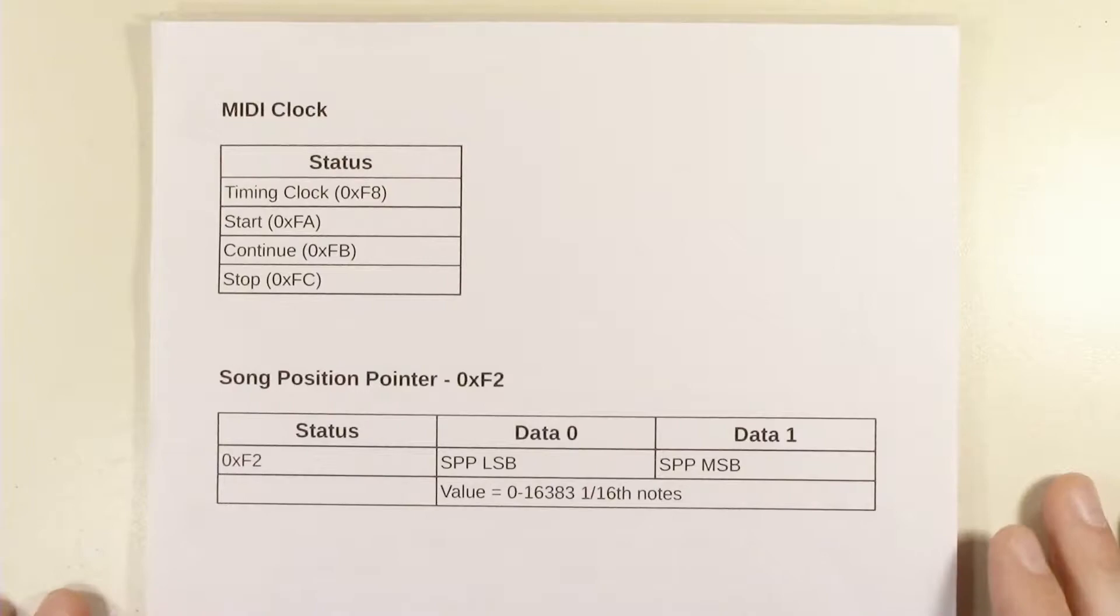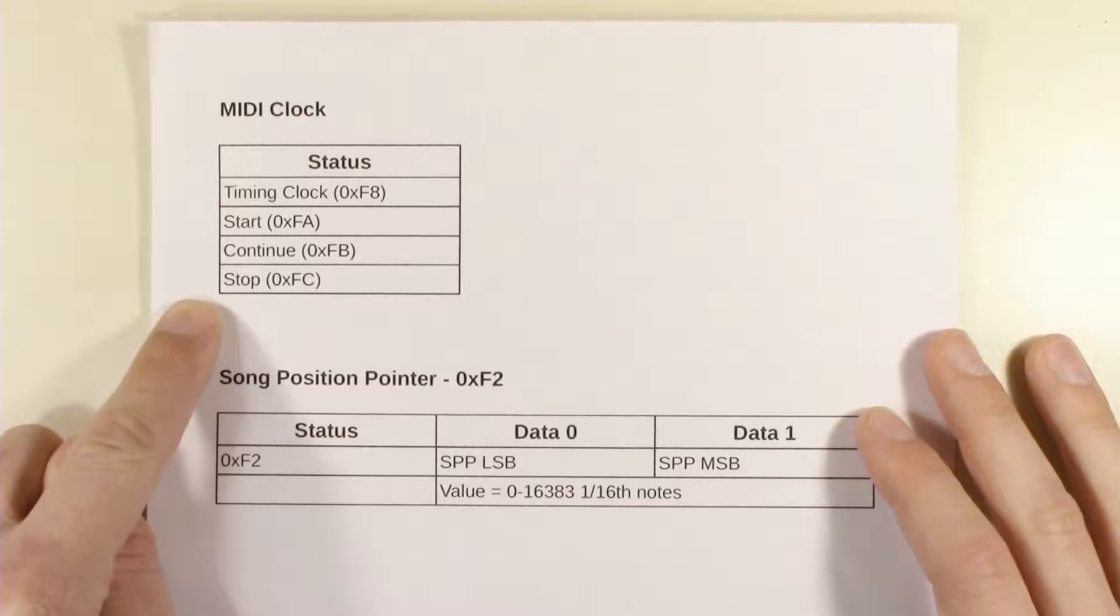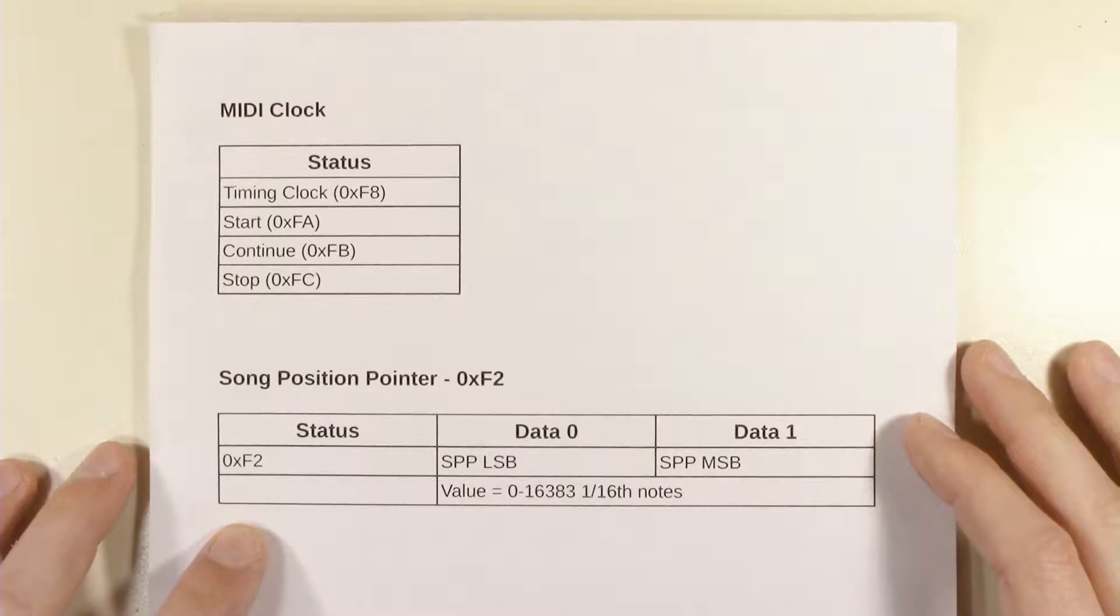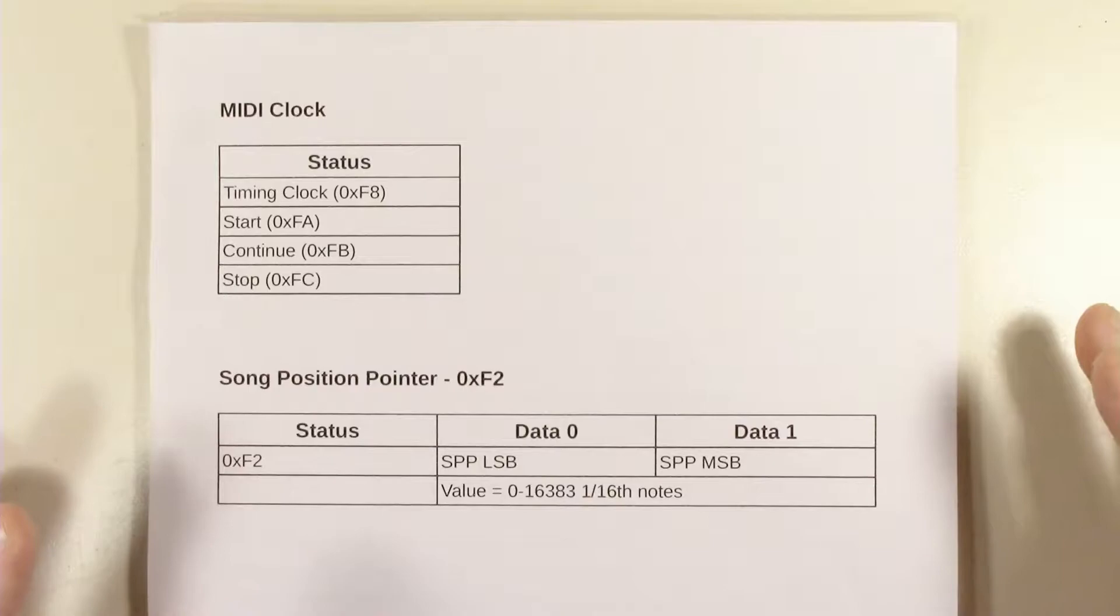So I've divided it in this paper up into the two sections. The MIDI clock messages really consists of these four messages here and the song position pointer is basically used when the sequencer is stopped to move around in a sequence. So let's say you have two different sequencers you can keep them synchronized. But let's talk about the MIDI clock first.